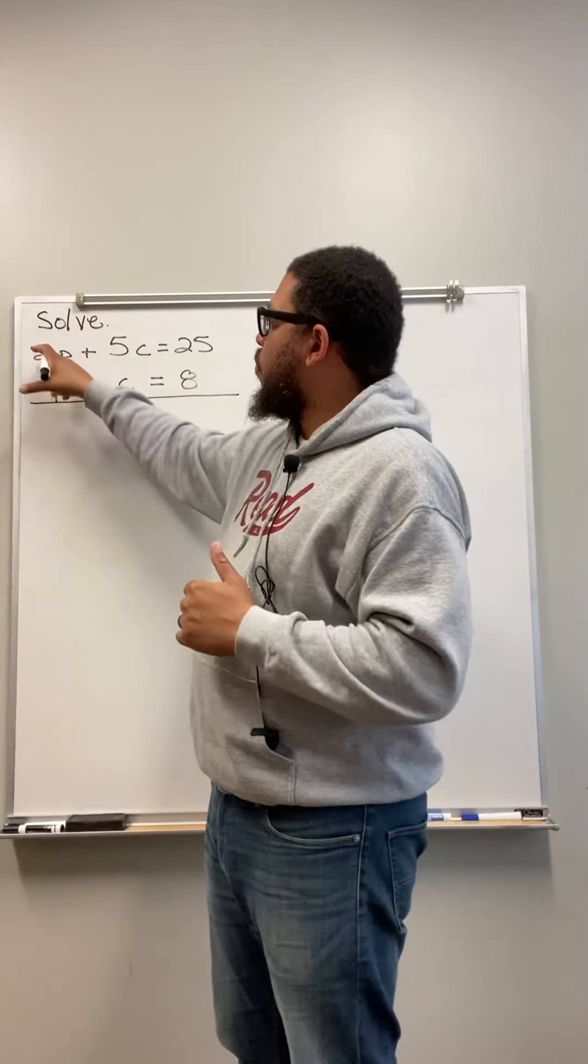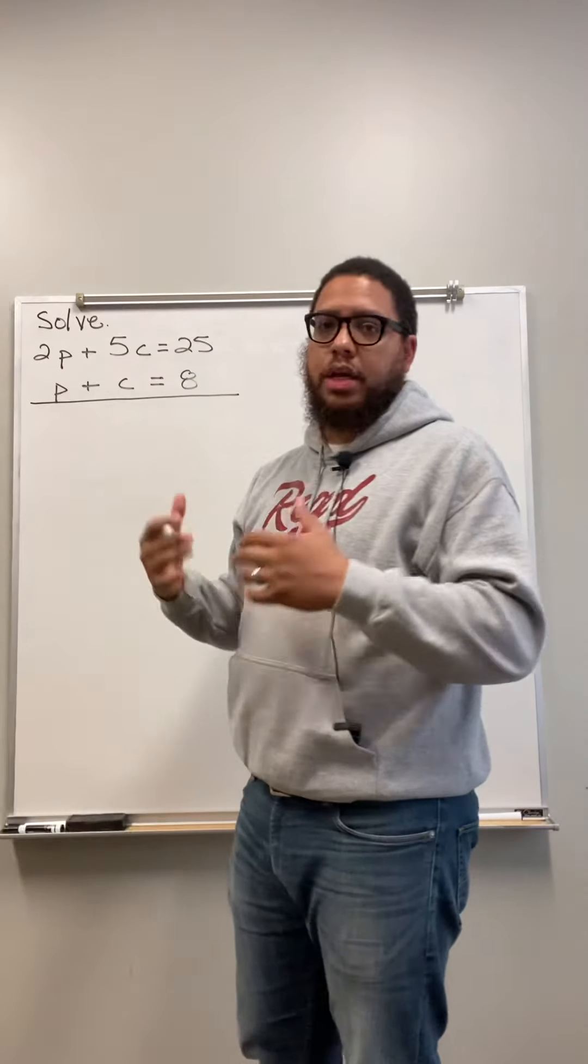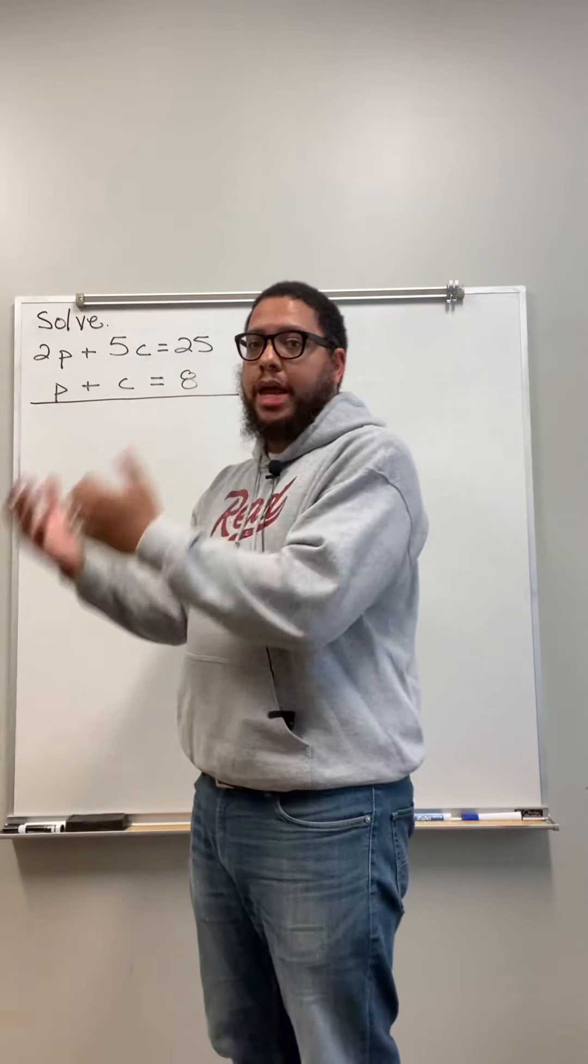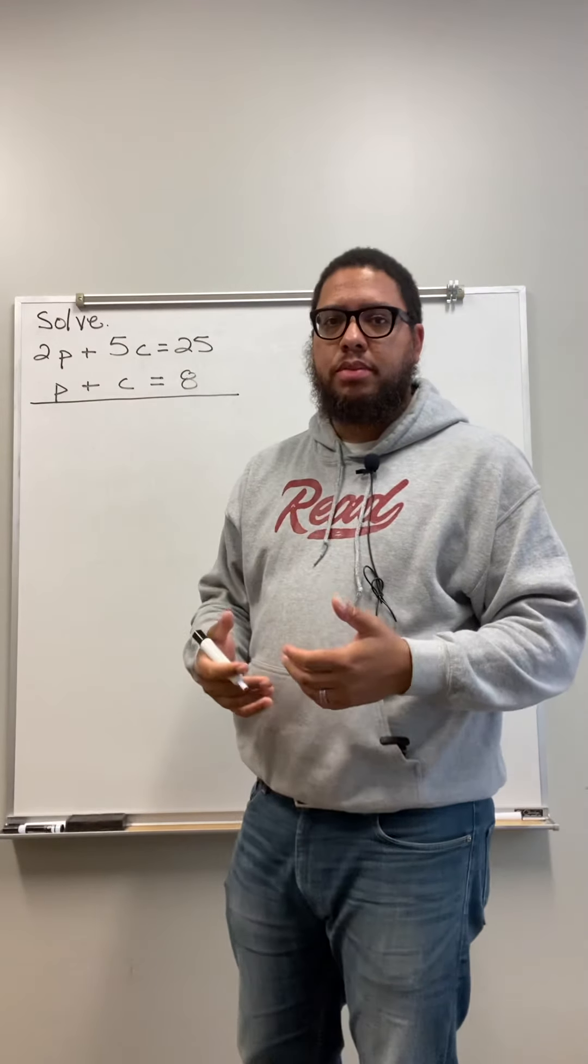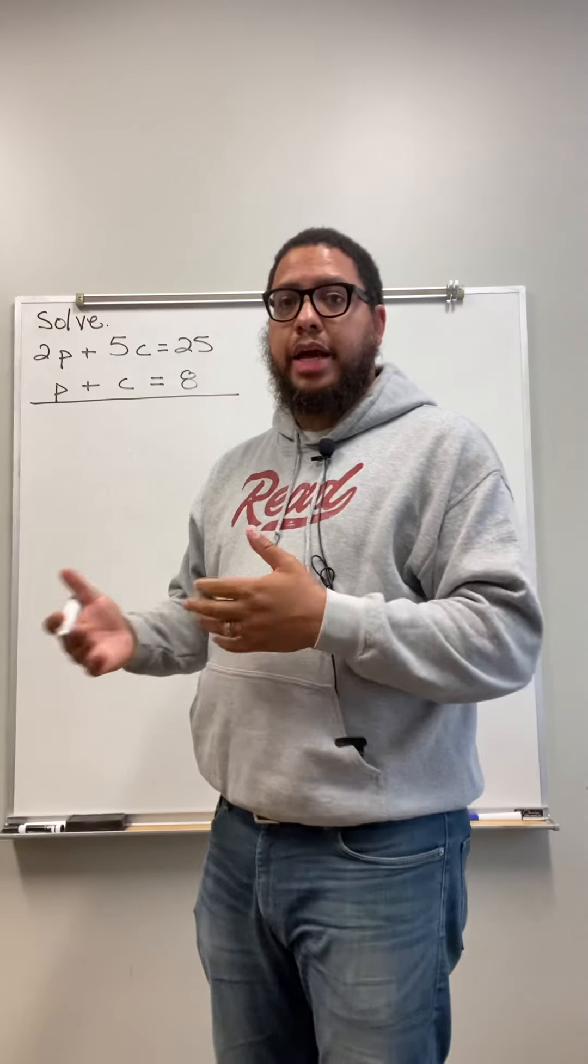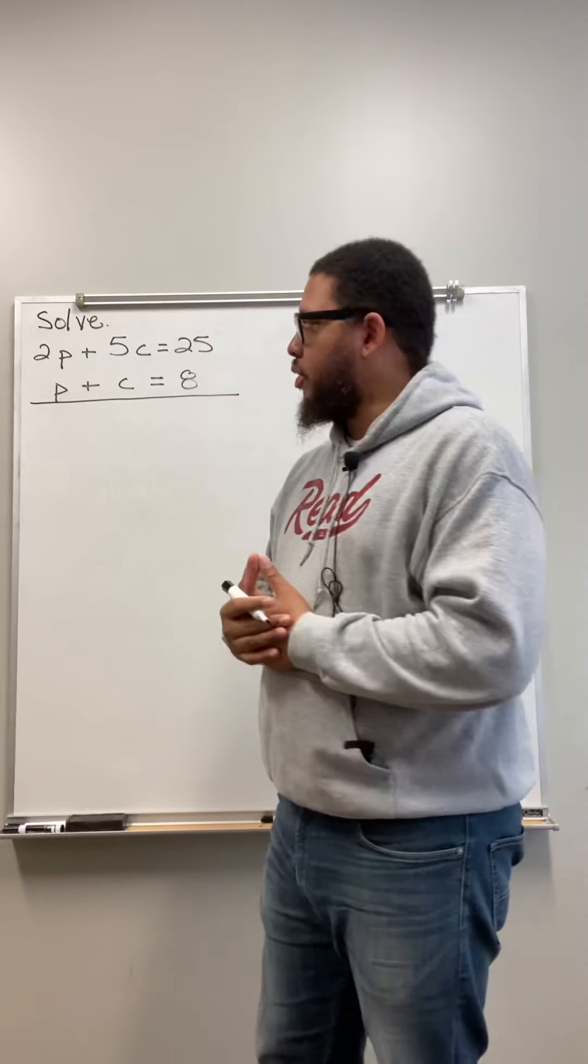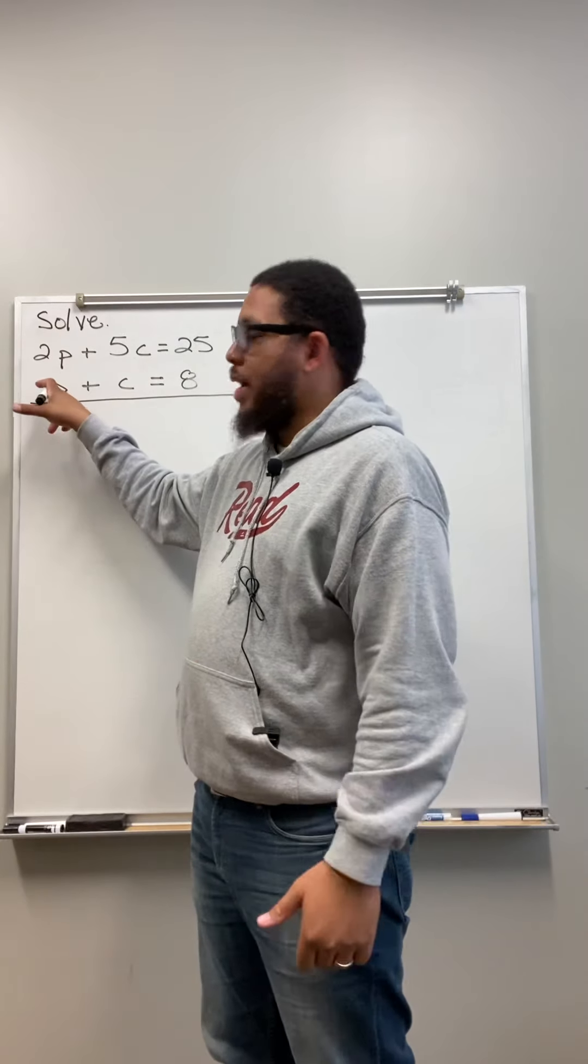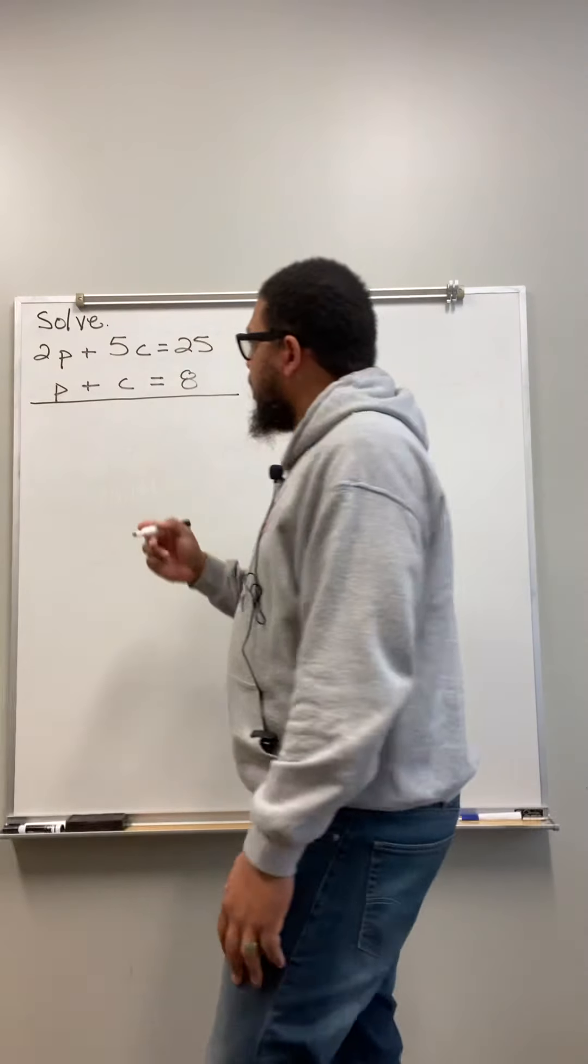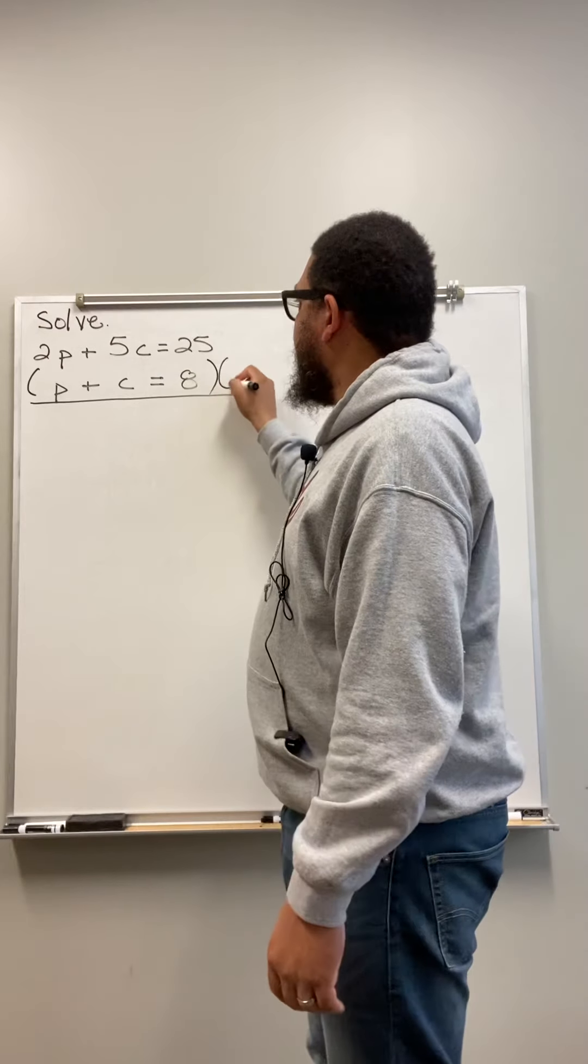What I'm going to do is I'm going to decide to cancel out the P's. Now, how would I do that? Think about it like this. What would I have to add 2P to in order to equal zero? The exact opposite of 2P. The exact opposite of 2P is negative 2P. So, my question for real is, how do I change this positive P into a negative 2P? I multiply.